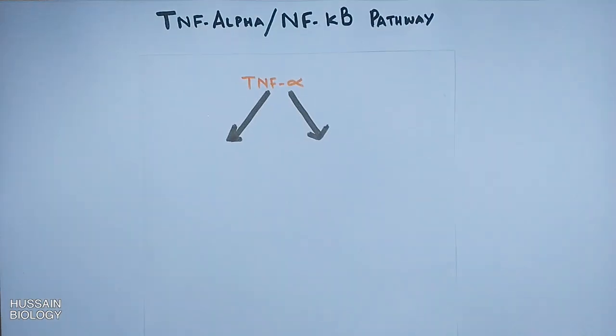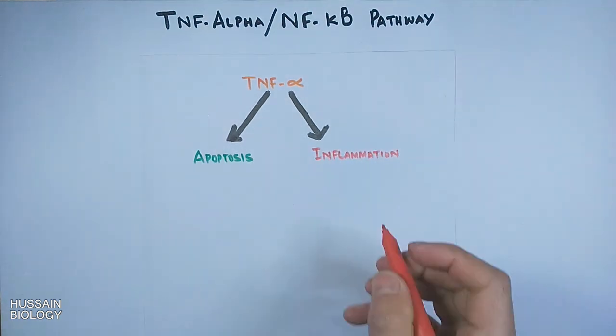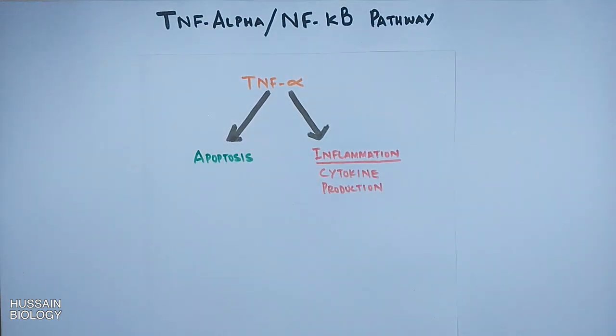We know TNF-alpha has the capability to drive apoptosis, but TNF-alpha can also skip this apoptosis and drive cell survival pathways in the form of inflammation by cytokine production in the NF-κB pathway.